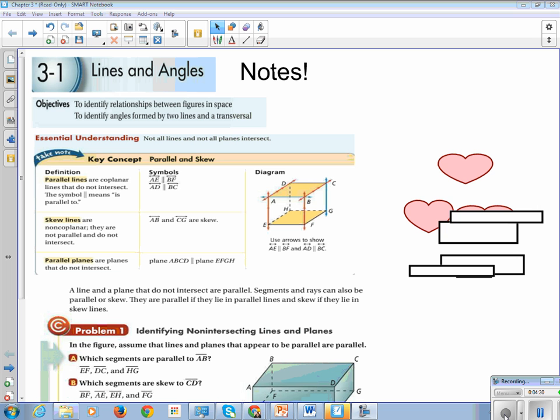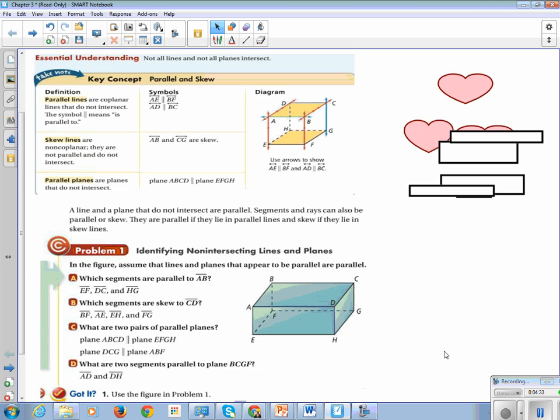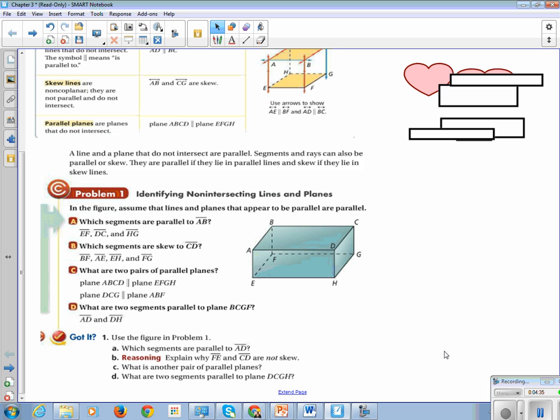So we're going to identify, which happens to be my favorite part of geometry, because it's the part that needs the least amount of explanation. You just have to go with these guys over here and those guys over there. It's not difficult. Problem number one, identifying non-intersecting lines and planes in the figure. Assume the lines and planes that appear to be parallel are parallel.